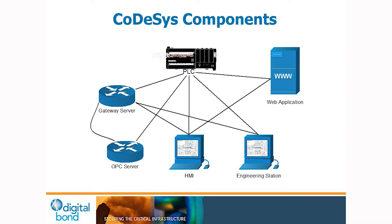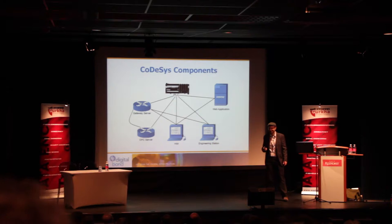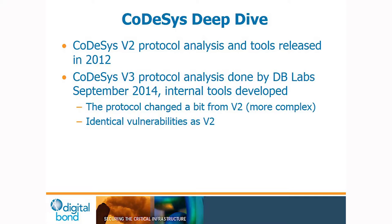This is how the CODESYS portions interact with each other. The main PLC runs the ladder logic runtime. An HMI may talk to the PLC directly or through the gateway server. An engineering workstation may also talk to the PLC directly or via the gateway. Some PLCs have built-in web applications where the HMI speaks HTTP to the web app, which then speaks the CODESYS protocol to the PLC on the back end. There are a lot of different parts to the CODESYS environment, which makes it, unfortunately, difficult to fix.